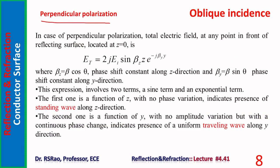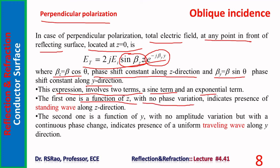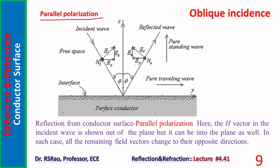For perpendicular polarization, the total electric field at any point in front of the reflecting surface is E_t equals 2j E_i sin(β_z · z) e^(-jβ_y · y), where β_z equals β cos θ is the phase shift constant along z, and β_y equals β sin θ is the phase shift constant along y. This expression has two parts: the sine term is a function of z with no phase variation, indicating a standing wave along z; the exponential term is a function of y with continuous phase change, indicating a uniform traveling wave in the y direction.